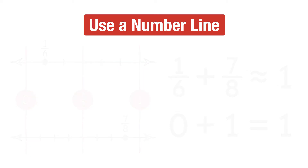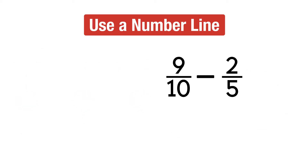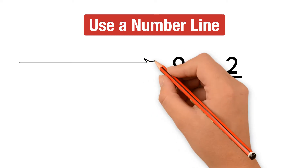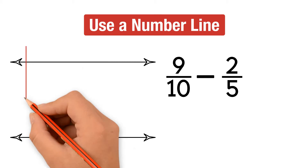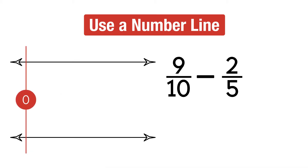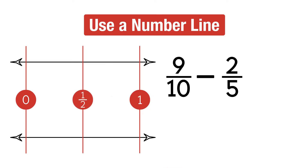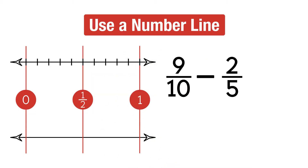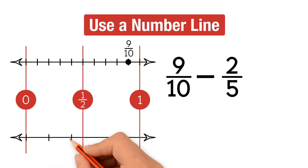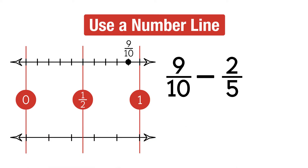Let's try another example: 9 tenths minus 2 fifths. Once again, we're going to use two different number lines, one for 9 tenths and one for 2 fifths. We label 0, 1, and half on both number lines. We divide the first number line into 10 parts and mark 9 tenths. We divide the second number line into 5 parts and mark 2 fifths.